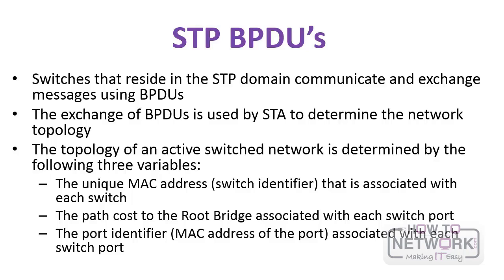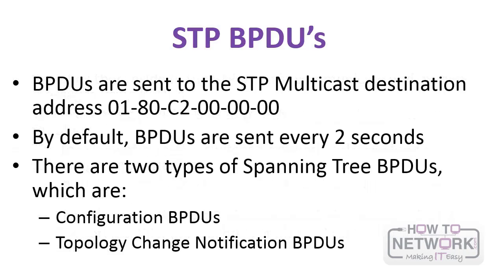The topology of an active switch network is determined by three variables: the unique MAC address or switch identifier associated with each switch, the path cost to the root bridge associated with each port on the switch, and the port identifier. All of these play a big role in the decision making of how traffic will flow on a network.